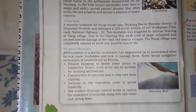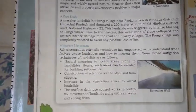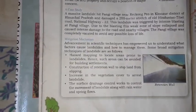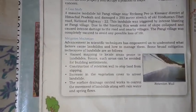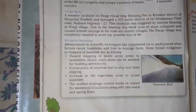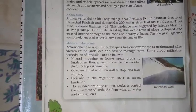The second mitigation measure is the construction of retention walls to stop the land from sliding.